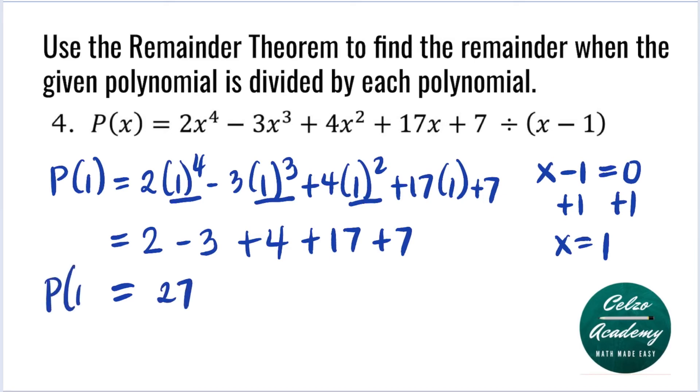So P of 1 is equal to 27, which means 27 is the remainder when P of X is divided by X minus 1.